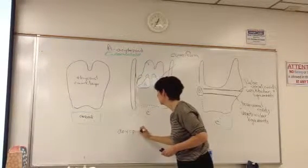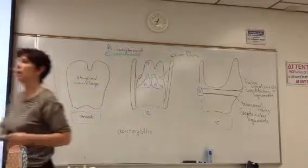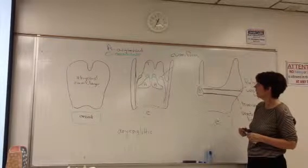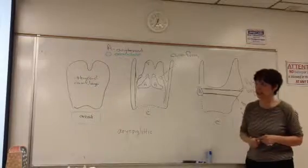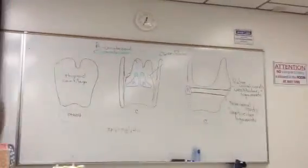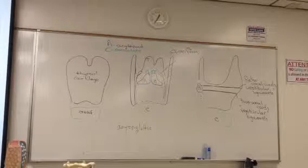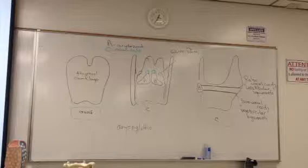Those are the cartilages, and they're covered with a mucous membrane as you can see in this model. The laryngeal muscles function not just to keep the airway open, but to allow movement and modify the position of the cartilages and the opening of the vocal ligaments.